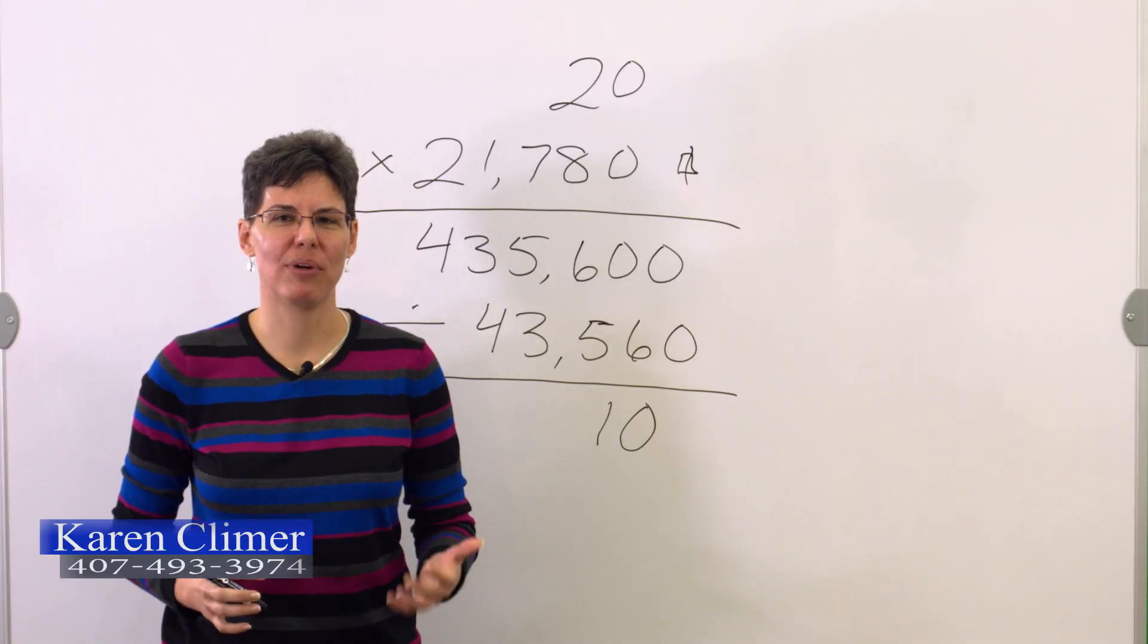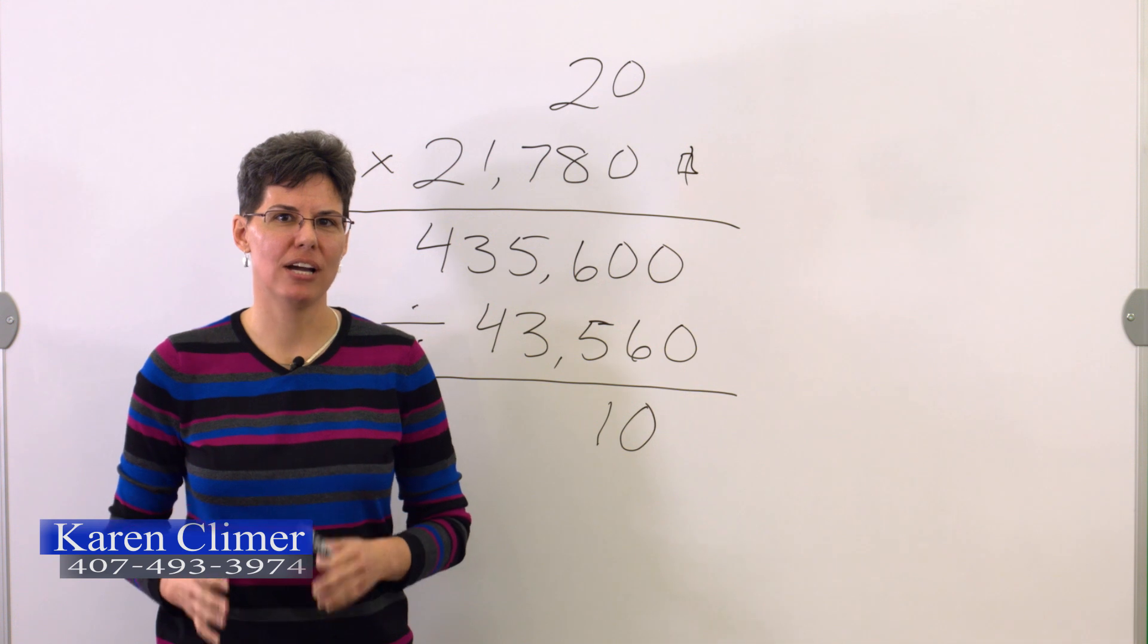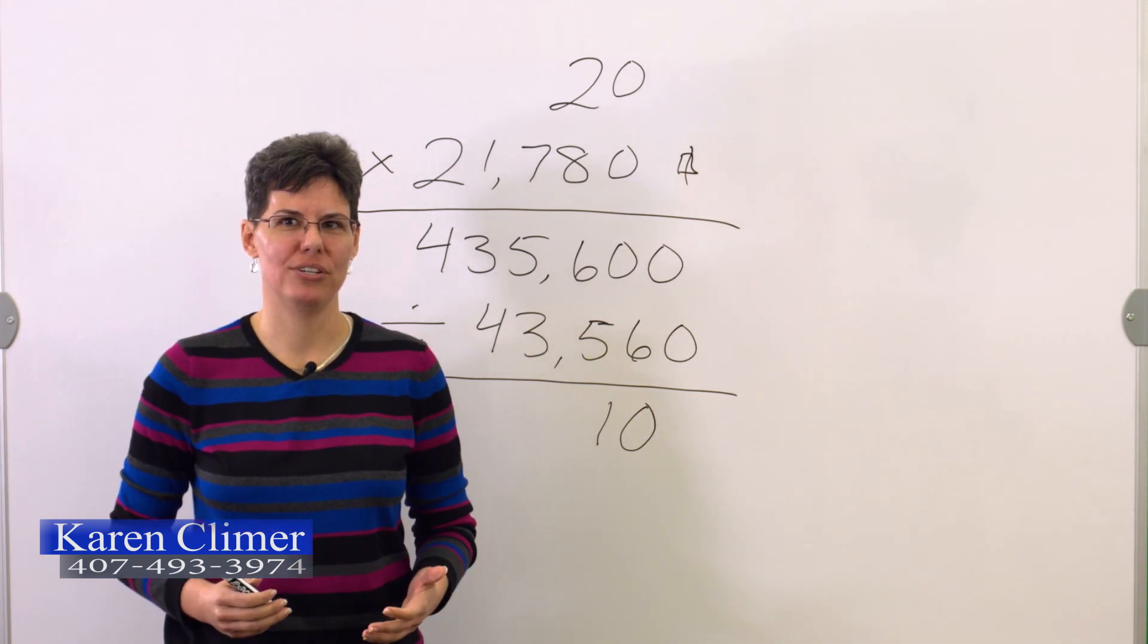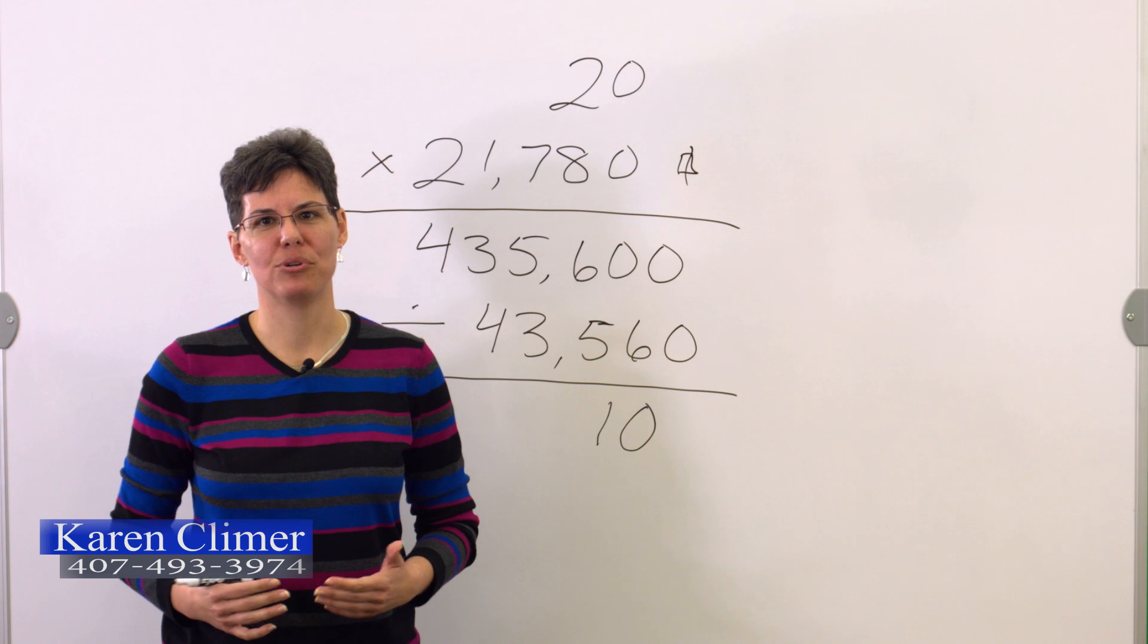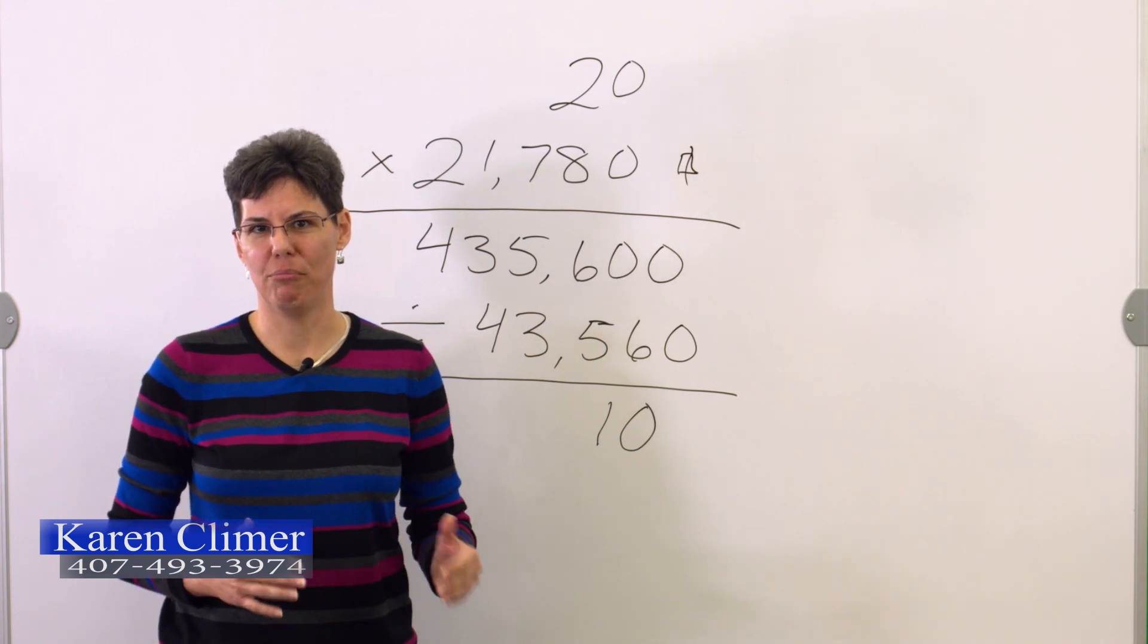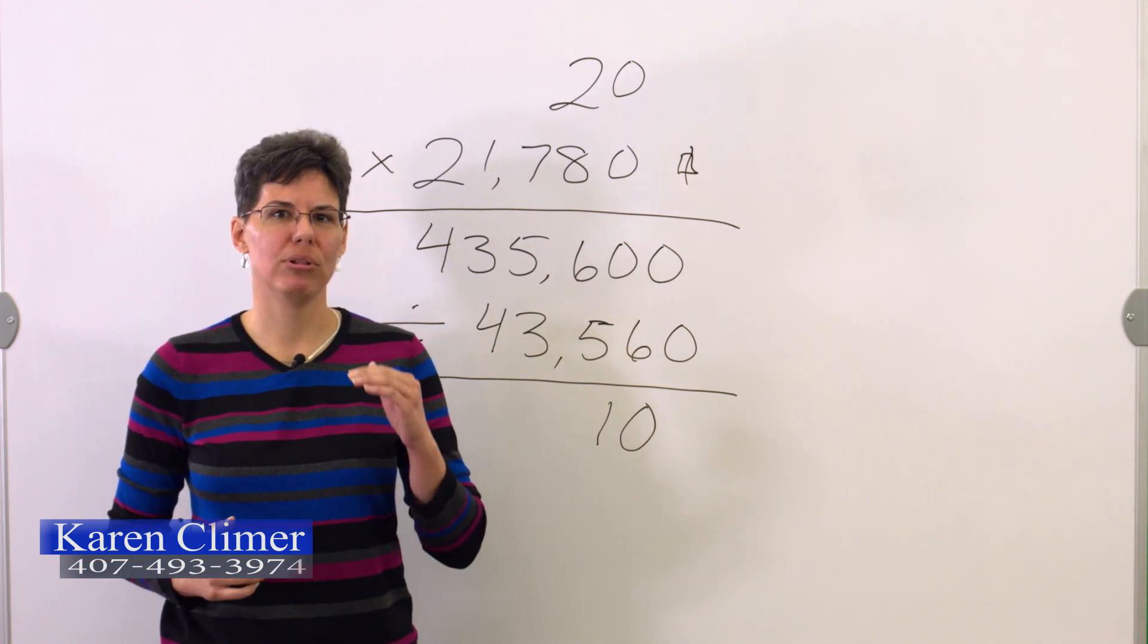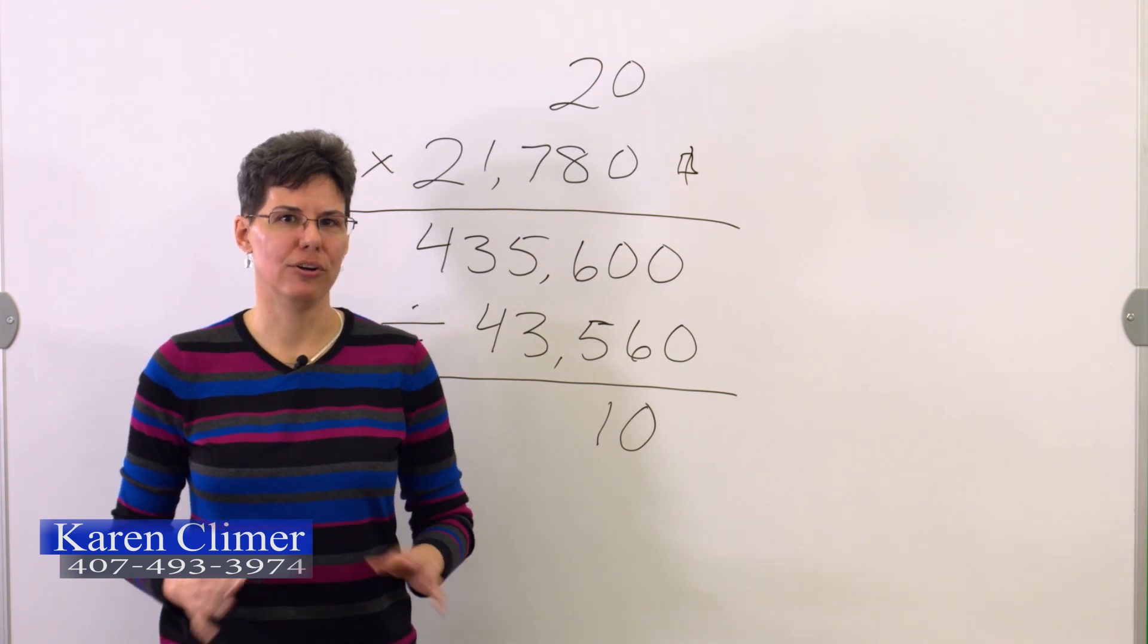The question mentioned that Brown owned 100 acres, but we never use that number. This is very common in the math questions. I call this problem trash. They'll throw in extra numbers that aren't relevant. Do not feel like you need to use every single number in the math questions. Just focus on the formula, plug in the numbers you need, and ignore everything else.